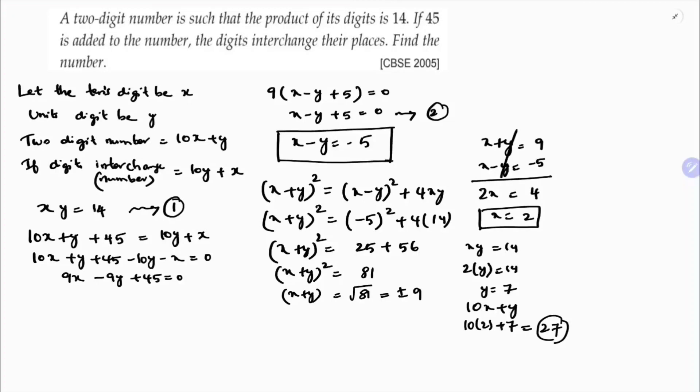If I will take minus 9, if you want you can try. Negative value will come, so you can ignore that. x plus y equals minus 9, x minus y equals minus 5. So here you will get 2x equals minus 14, x equals minus 7. So ignoring this negative value, just take the positive. So the number is 27.